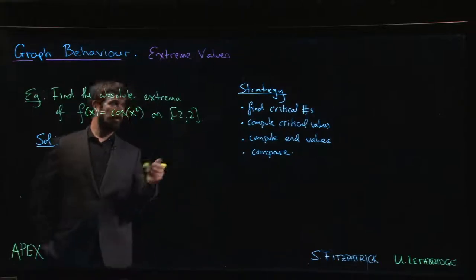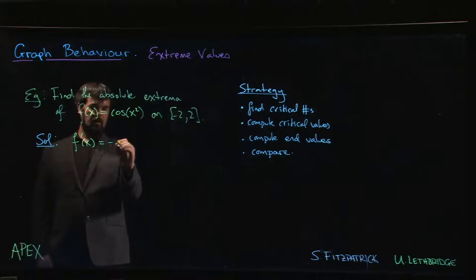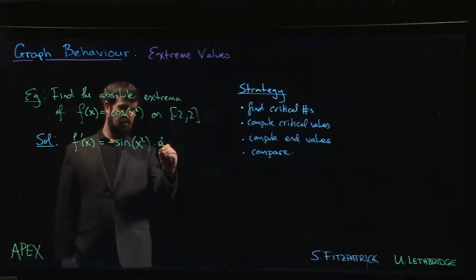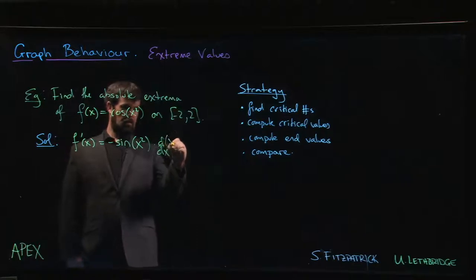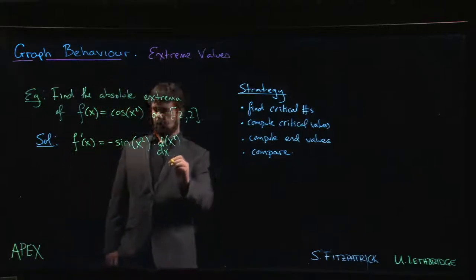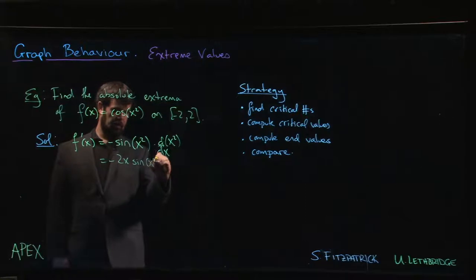So we start by looking for critical numbers. Chain rule tells us that the derivative, we take the derivative of the outside, so the derivative of cosine is minus sine x squared, times the derivative of x squared, and that leaves us with minus 2x sine of x squared.